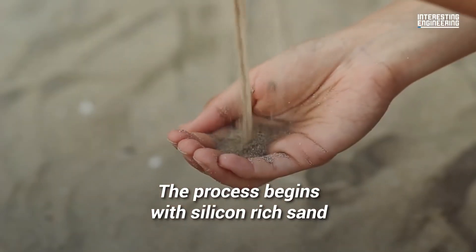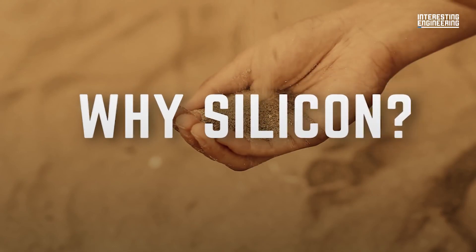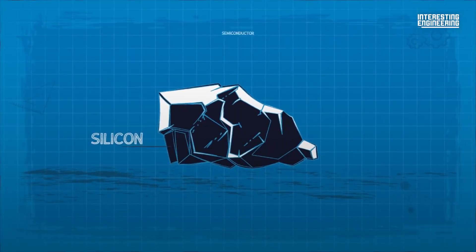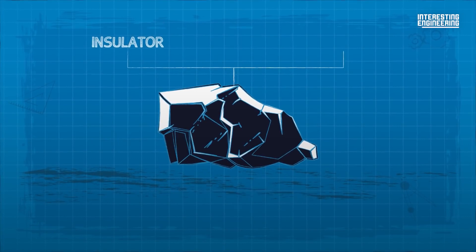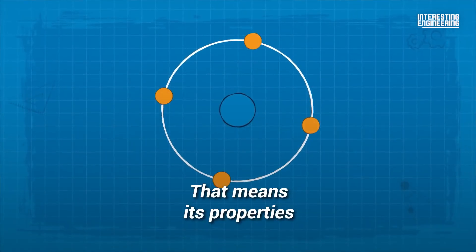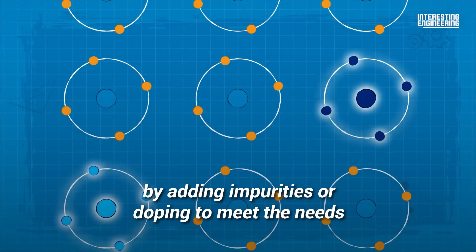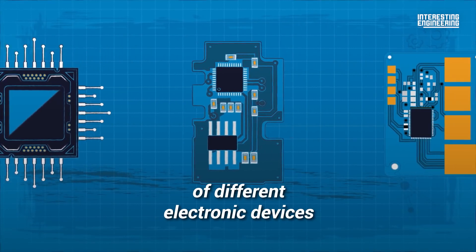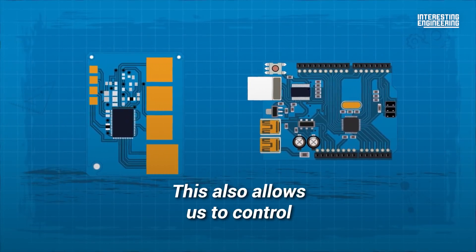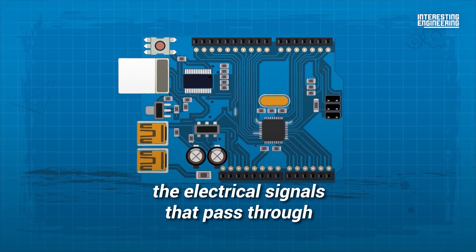The process begins with silicon-rich sand. Why silicon? Silicon is a semiconductor — it's the sweet spot between an insulator and a pure conductor. That means its properties, such as its conductivity, can be altered by adding impurities, or doping, to meet the needs of different electronic devices. This also allows us to control the electrical signals that pass through.